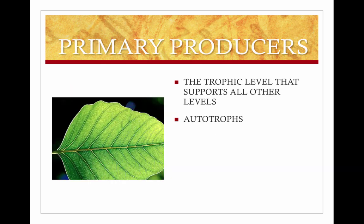Primary producers are the trophic level that supports all other levels. They are autotrophs, mostly photosynthetic. On land, there are plants, and in oceans and fresh bodies of water, they are algae.